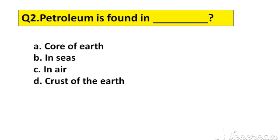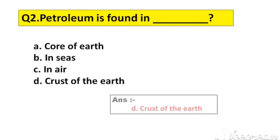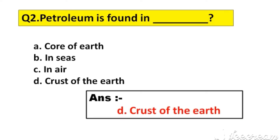Question number 2. Petroleum is found in dash. Option A: Core of Earth, B: In Seas, C: In Air, D: Crest of the Earth. The right answer is option D: Crest of the Earth.